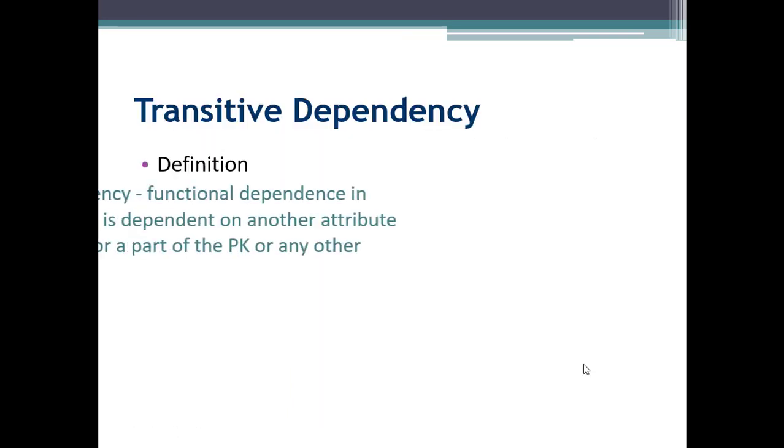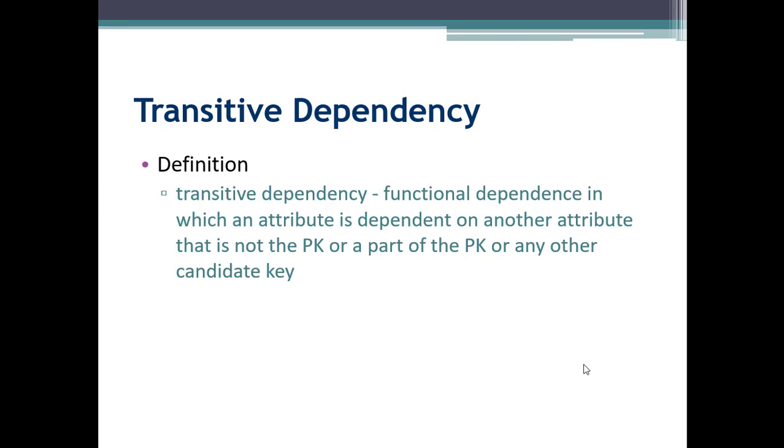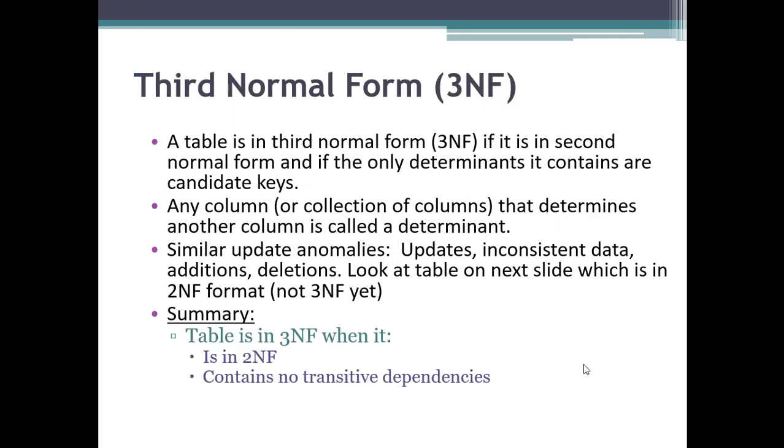How do you get to 3NF? That's what our goal is. So let's define that transitive dependency. It is a functional dependency, a certain type of functional dependency. The attribute is dependent on another attribute, and that other attribute is not a part of the PK. And it's not a part of any candidate key at all. Just another attribute is determining this attribute. To get to 3NF, you got to start in 2NF. And then if the only determinants are candidate keys, you're in 3NF. If they're not, you got to move that into another table. So again, if you're not in 3NF, you're going to have similar update, addition, deletion anomalies as you did in 2NF. They're still there. In summary, you're in 3NF when you're in 2NF and there are no transitive dependencies.